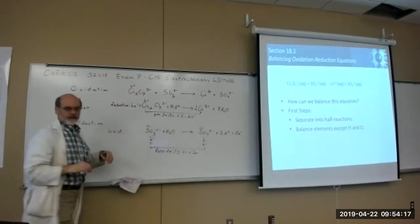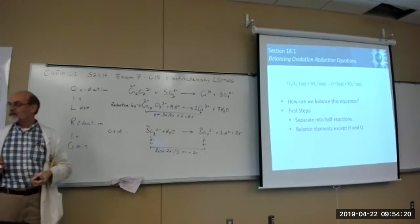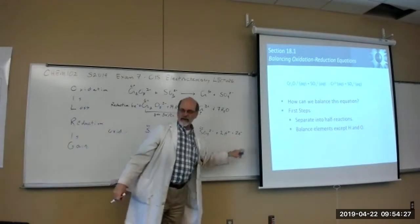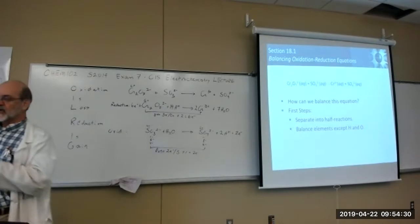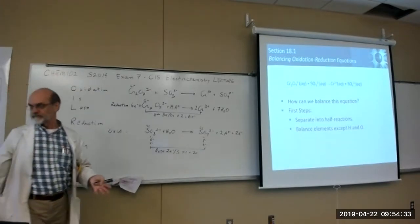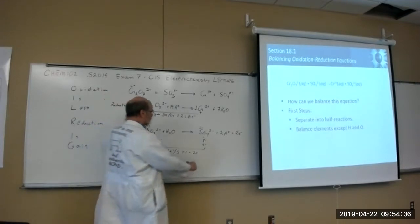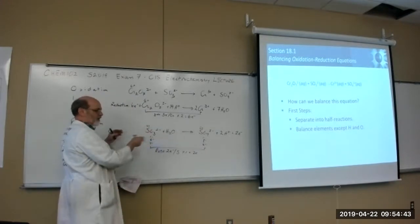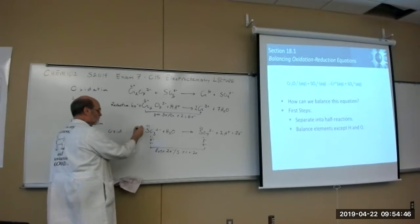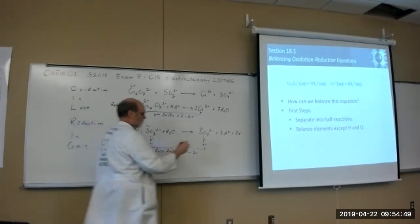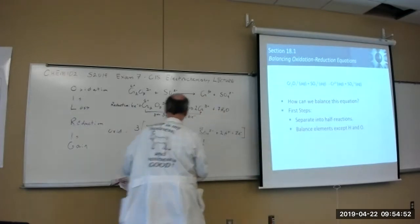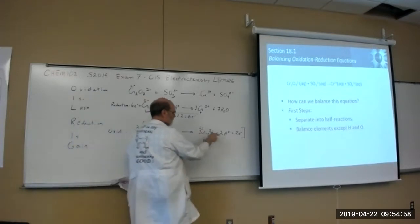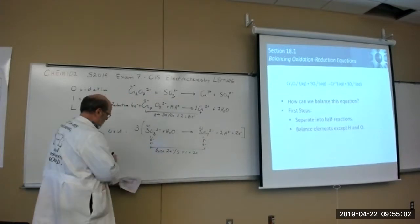The half reactions are balanced but we can't combine them yet because we have 6 electrons on one side and 2 on the other. To cancel, we multiply the oxidation half-reaction by 3 to get 6 electrons — so 3 times each term: 3 sulfites, 3 waters, 3 sulfates, 6 hydrogens, and 6 electrons.